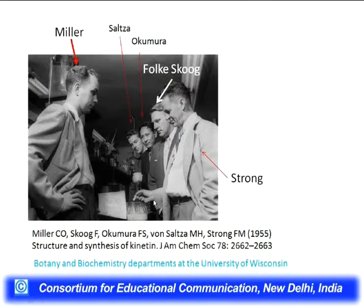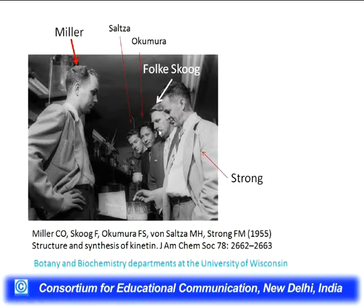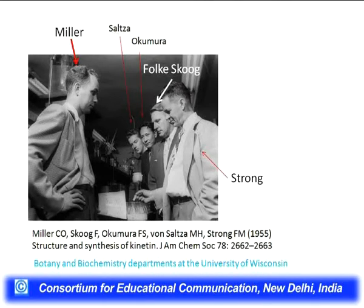The paper that was published in 1953 appeared in the Journal of the American Chemical Society. The first author, Miller, is pictured with his co-authors. Miller was a postdoc in the laboratory of Skoog. Skoog is the second person, and the other gentleman is a biochemist, Francis Strong, from the Department of Biochemistry. This group, spearheaded by Skoog and Dr. Strong, conducted very exhaustive exercises to identify something that would promote plant growth.